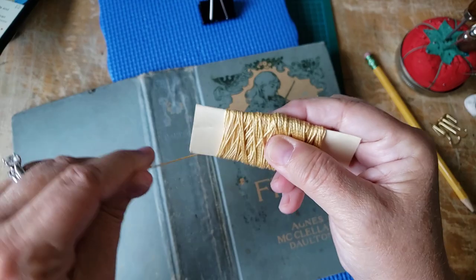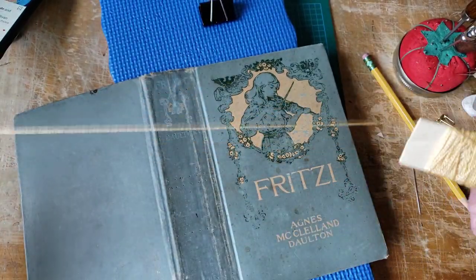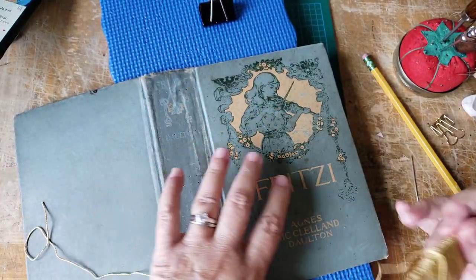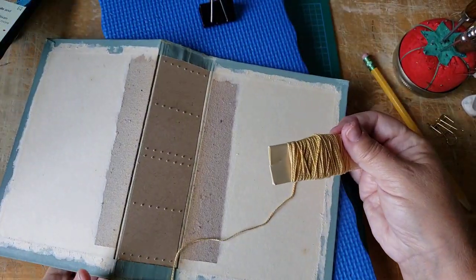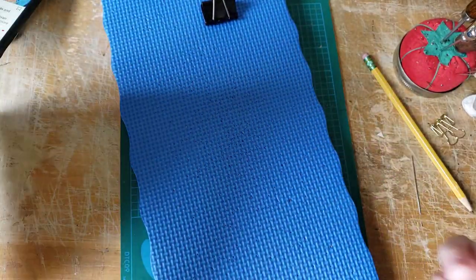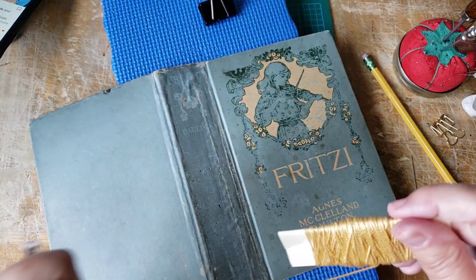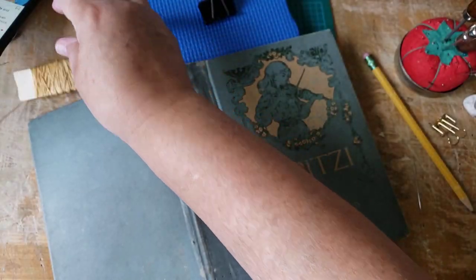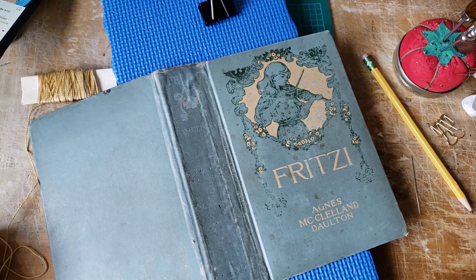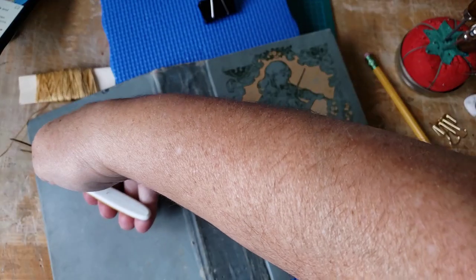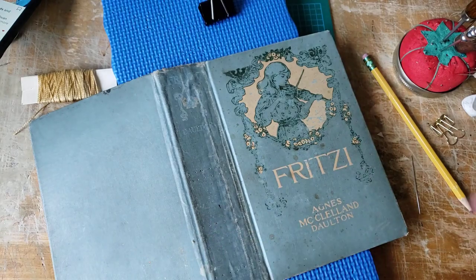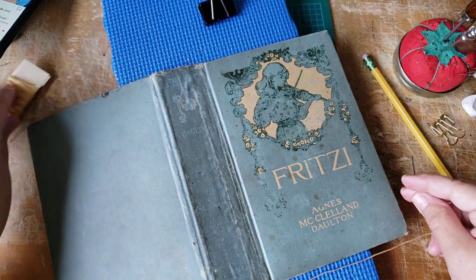Now, here's the neat thing about these faux signature threads. The other side can be an utter mess and no one is ever going to see it again because it's going to get glued between another piece of cardboard. So you don't have to sweat too much about being a pristine sewer because no one's going to see it.